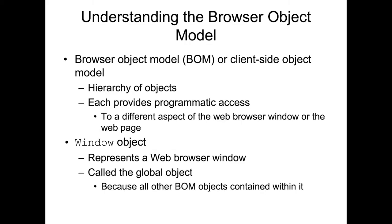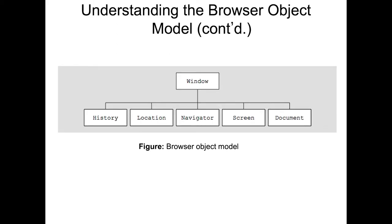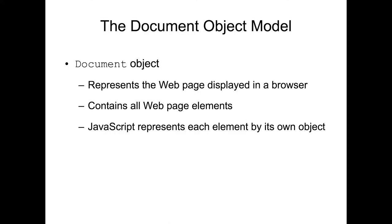Besides DOM there is also BOM, or Browser Object Model. It is a hierarchy of objects that provides programmatic access to different aspects of a browser window or web page, so we can modify the window object which represents a web browser window — it is called the global object. The window object can be anything: it can be history, location, navigator, or screen. DOM, or Document Object Model, represents the web page displayed in a browser and contains all the web page elements such as paragraphs, headers, and tables.